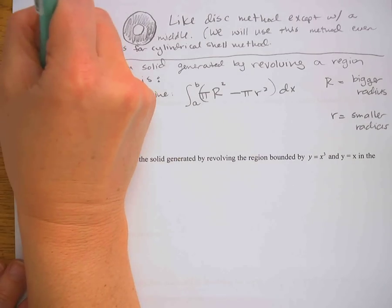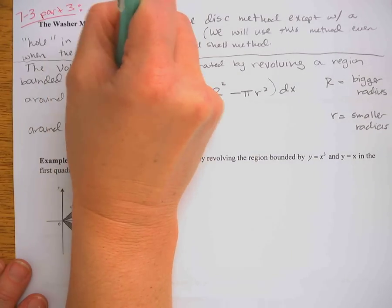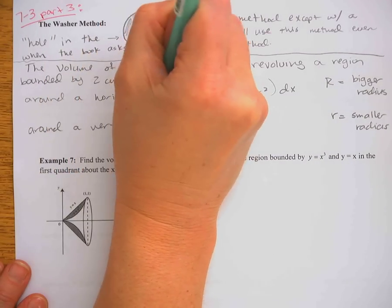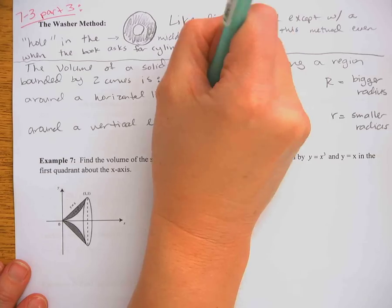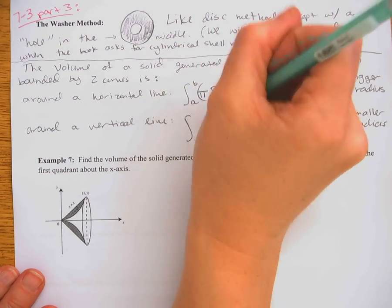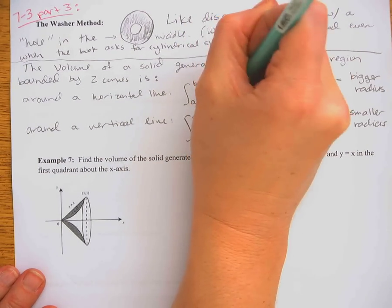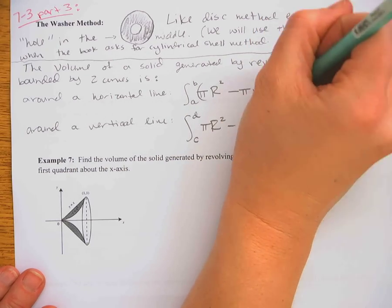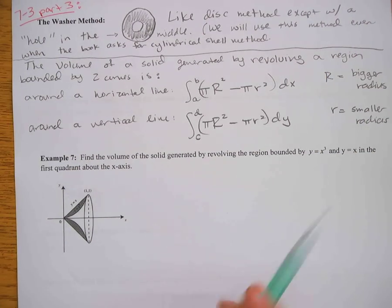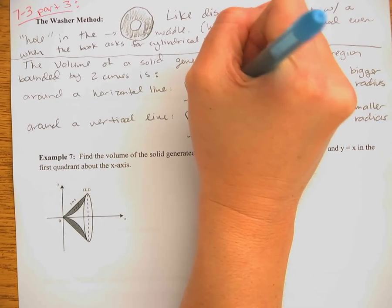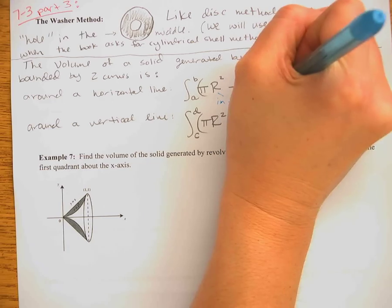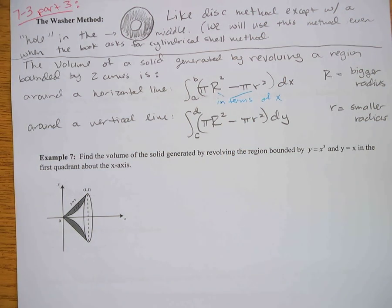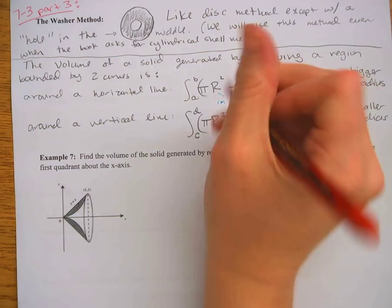If you're revolving around a vertical line, it's the same idea but you're integrating with respect to y — so you're integrating from bottom to top: pi R squared minus pi little r squared dy. In the first case the radii have to be in terms of x, whereas for the vertical case they have to be in terms of y.